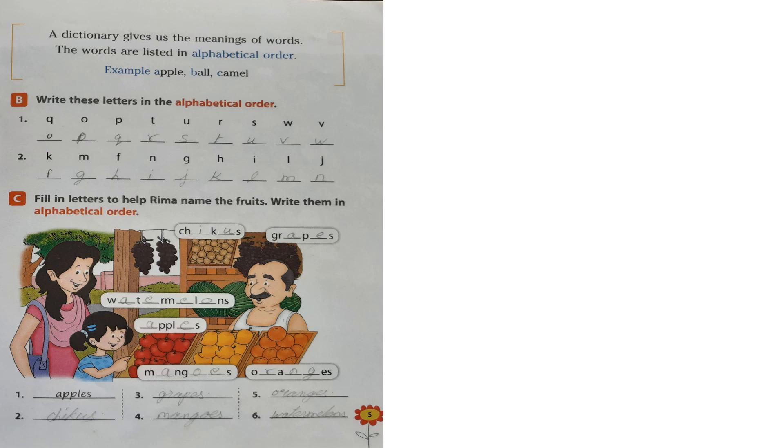Now see the next exercise. Fill in the letters to help Rima name the fruits. Write them in alphabetical order. Can you see the words over there? Yes, let us read out the names. What is that? C, H, I, K, U, S. Chikus.